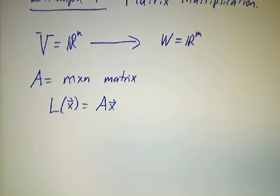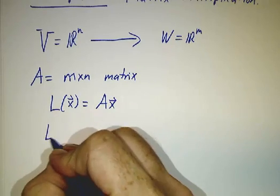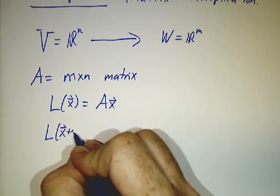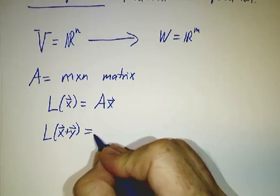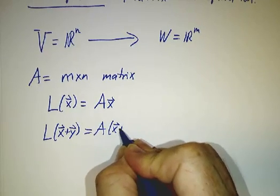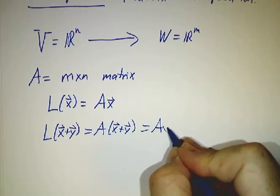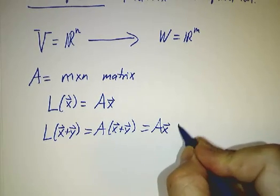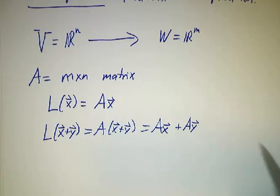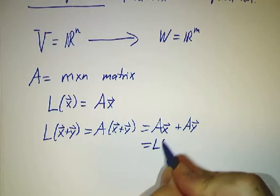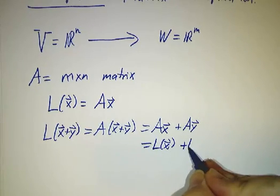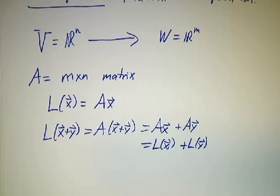Does it satisfy the rules? Let's check. If you take L of x plus y, that's A times x plus y. And that's Ax plus Ay. And that's L of x plus L of y. So far so good.